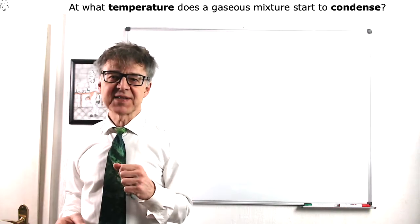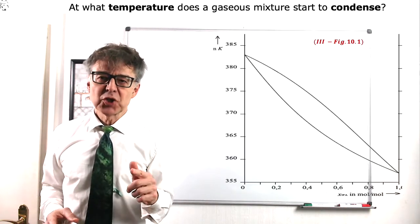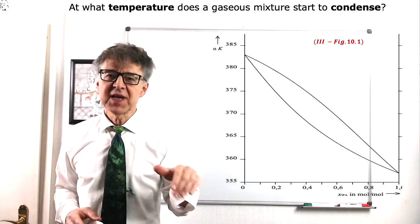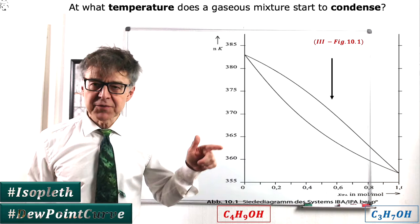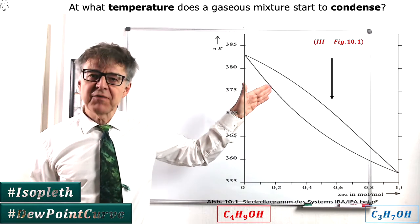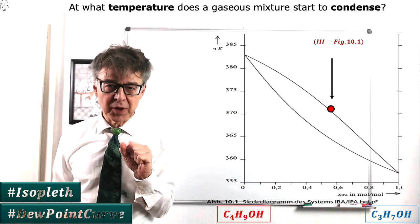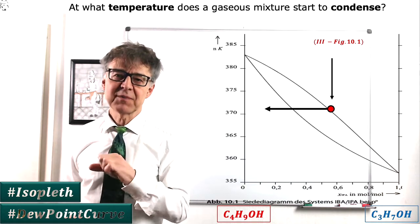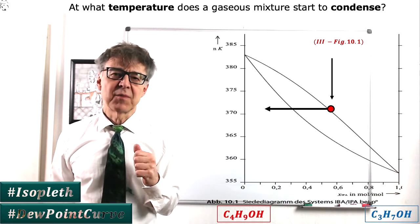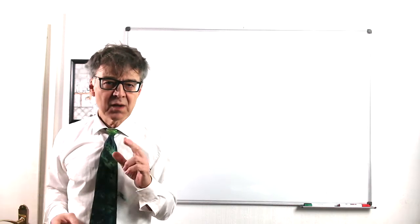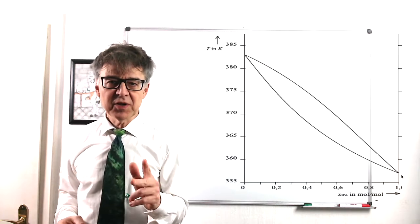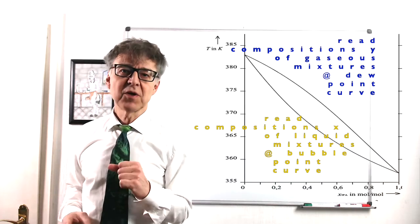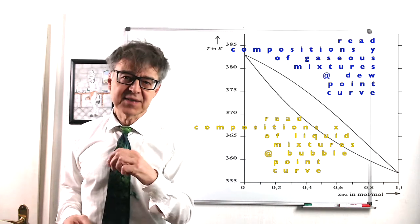The phase diagram also tells us at what temperature a 50-50 gaseous mixture of IBA and IPA will start to condense, start to dew. We only have to draw the isopleth from above and mark the intersection with the dew point curve. Obviously, at 371 K, the first liquid droplets condense from a gaseous 50-50 mixture. Remember, the boiling point curve always refers to the composition of the liquid mixture. The dew point curve always refers to the composition of gaseous mixtures.